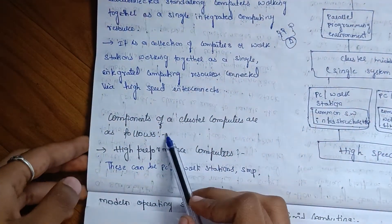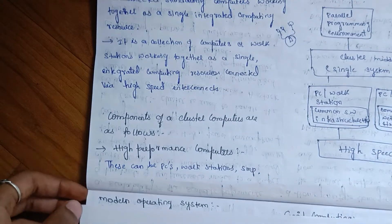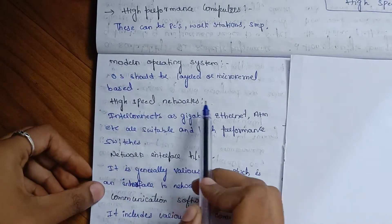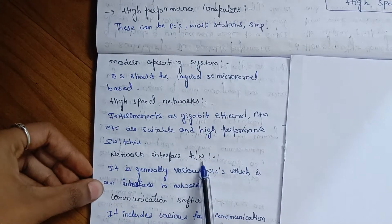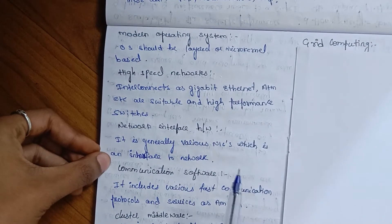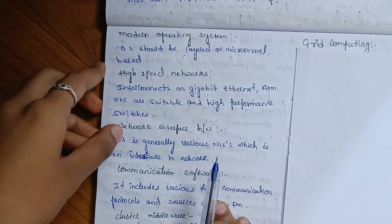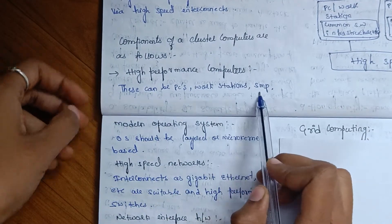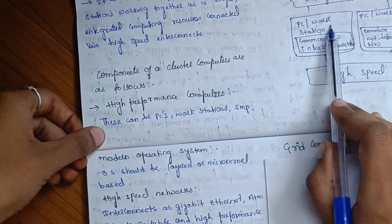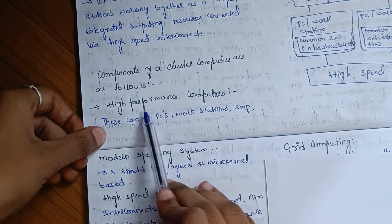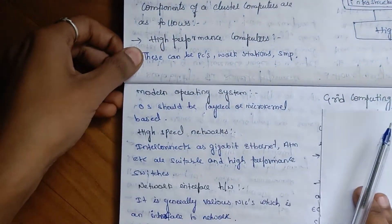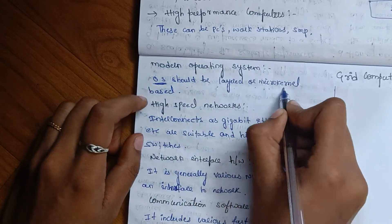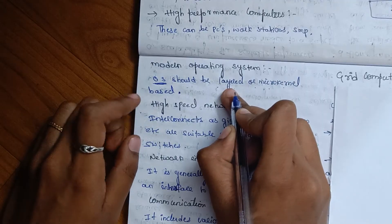The components of cluster computing are: high-performance clusters, a modern operating system, high-speed networks, network interface hardware, communication software, and cluster middleware. The nodes can be PCs, workstations, or SMPs. The operating system should be layered on a micro-kernel-based design.